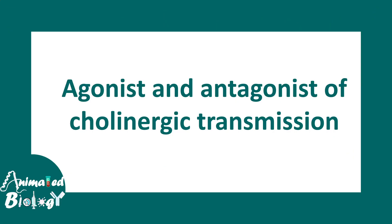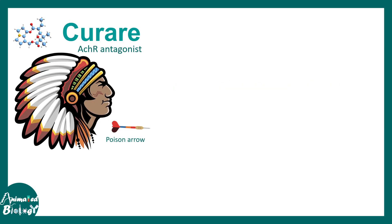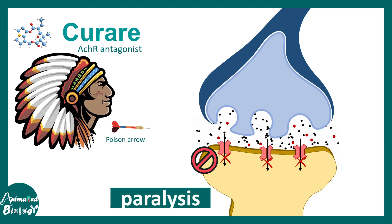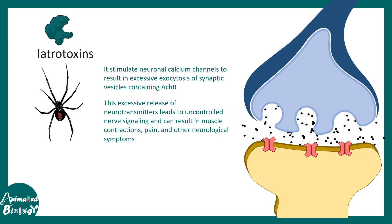There are specific antagonists and agonists of cholinergic transmission. Curare is a potent antagonist at the neuromuscular junction — historically used by indigenous peoples as arrow poison — it blocks the postsynaptic nicotinic cholinergic channels, leading to muscle paralysis. Similarly, latrotoxin stimulates neuronal calcium channels and leads to excessive release of acetylcholine, which is also detrimental to the neuromuscular junction and leads to paralysis.